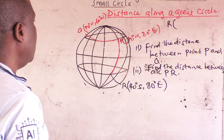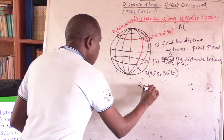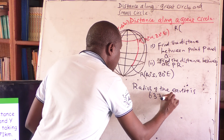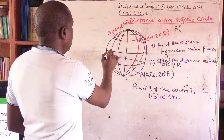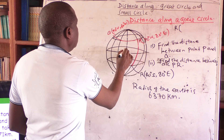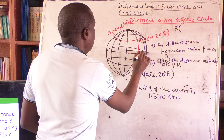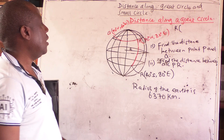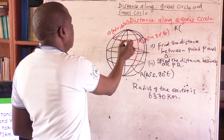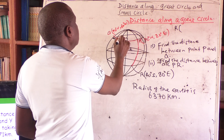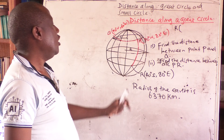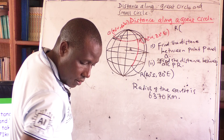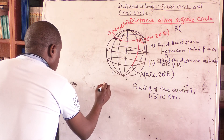We have been told the radius of the earth is 6,370. If this is our equator, then that is the center and the radius here is 6,370 kilometers. But if we talk about a specific latitude, its radius is not equivalent to the radius of the earth — it will be a smaller radius. So how do we find small r? I will use this illustration to show you how to do that.